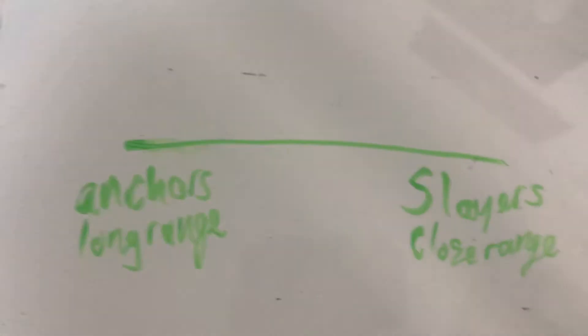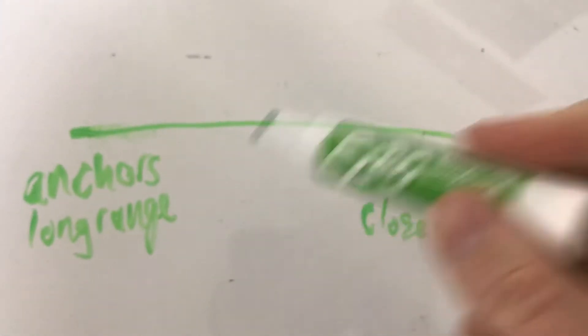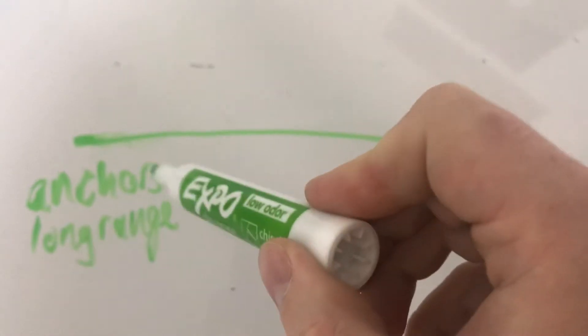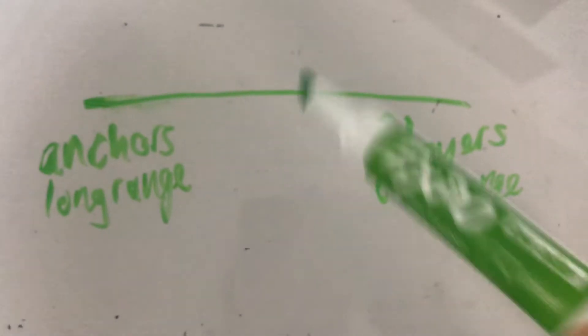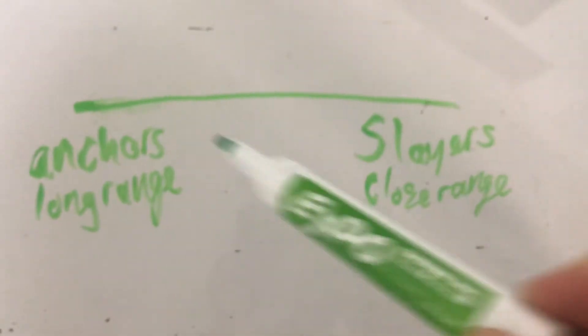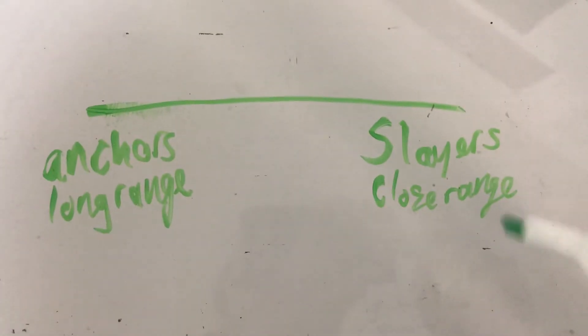So most shooters are over here, although the jet is more so towards the back, and then most snipers are here, although bamboo is more towards the middle. Explosher more towards anchor, tri more towards the slayer close range.